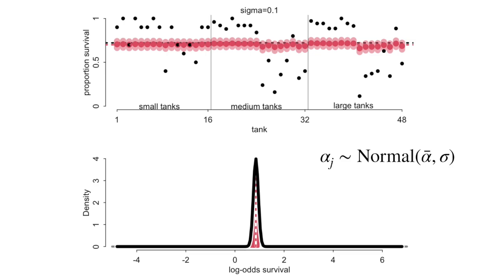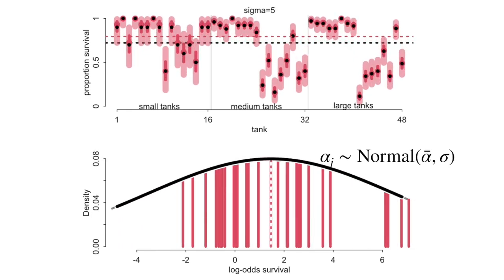At the bottom plot I'm showing the posterior distribution for the population — the alpha j distribution, which is the prior for each of the tanks. Now I'm going to let sigma increase all the way up to 5 and then back again. As sigma increases and is fixed at different values, it lets the distribution of per-tank estimates change. When sigma is 5, we get basically the opposite result: all individual tank estimates are quite dispersed and much closer to the black dots, because the prior isn't constraining estimates to be near the mean — it's a very flat prior.